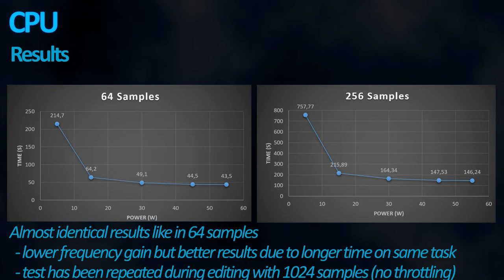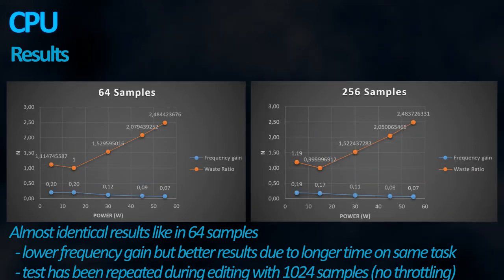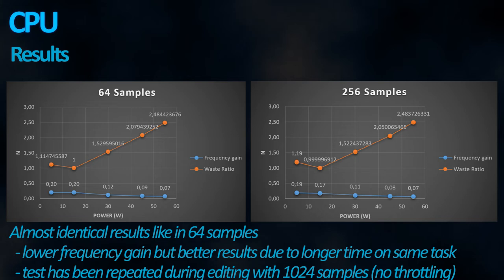For the 256-cycle render, the performance results are almost identical, which is expected. However, here we can see some minimal yet negligible changes in the frequency gain, which means that the CPU could not sustain the higher frequencies for very long.